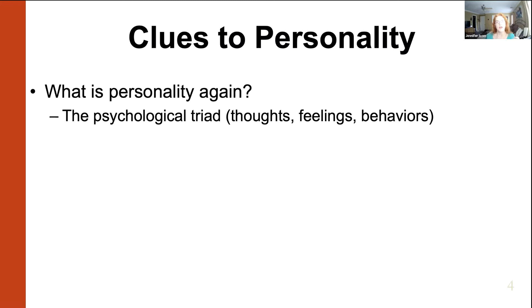Coming back to the clues to personality, they all stem from the psychological triad. When we collect data — self-report data, informant report, behavioral and life outcome — we are trying to get at evidence of that psychological triad: things that they say, things that they do, and ways that they respond emotionally.